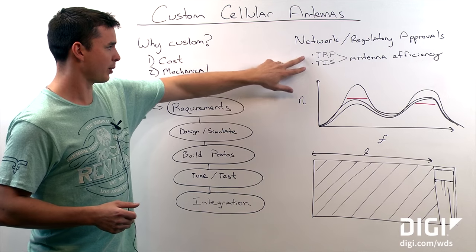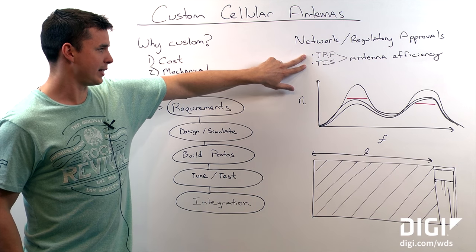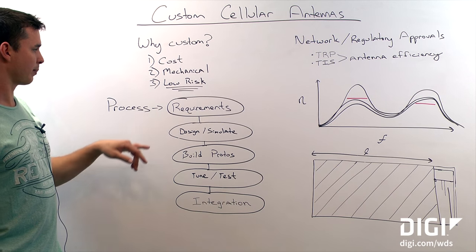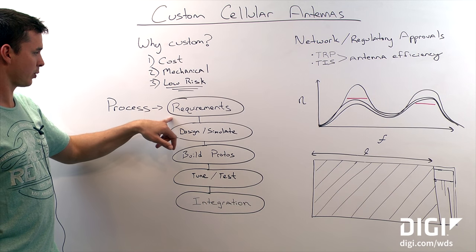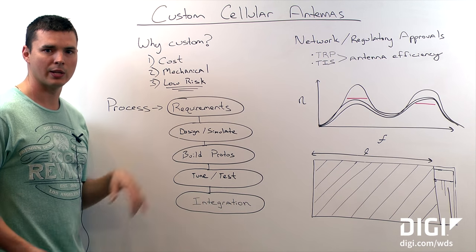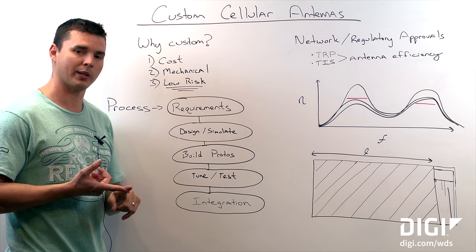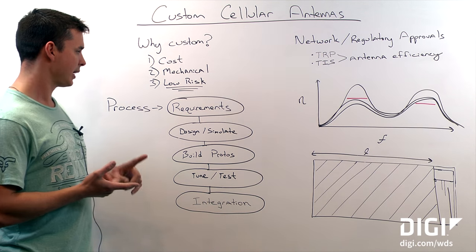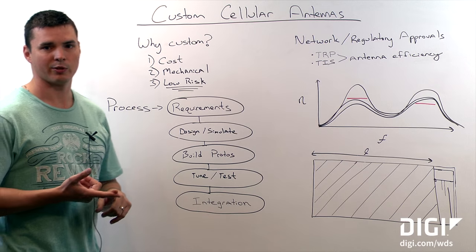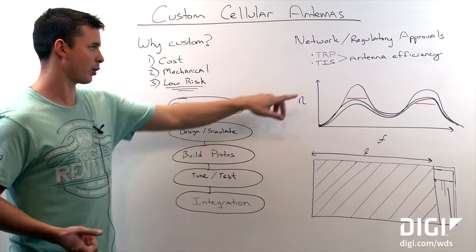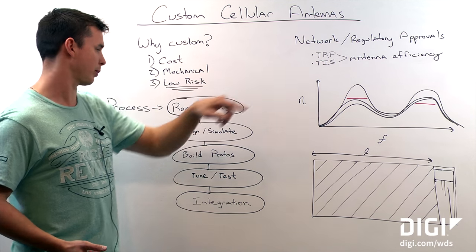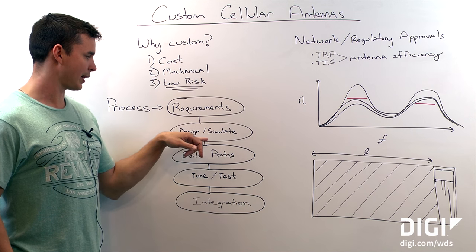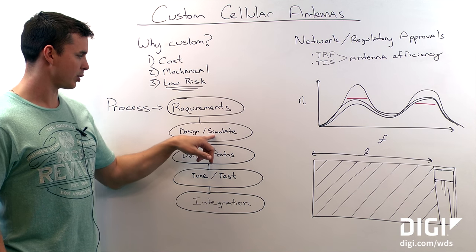These two numbers are going to drive the antenna efficiency requirements, which gets us right into our antenna design process. We start with the requirements — we need to know where you plan on shipping the product and which carrier you plan on using. Because AT&T and Verizon are going to have different OTA requirements, different TRP and TIS requirements, and that's going to drive the antenna design, electromagnetic modeling, and the simulation.